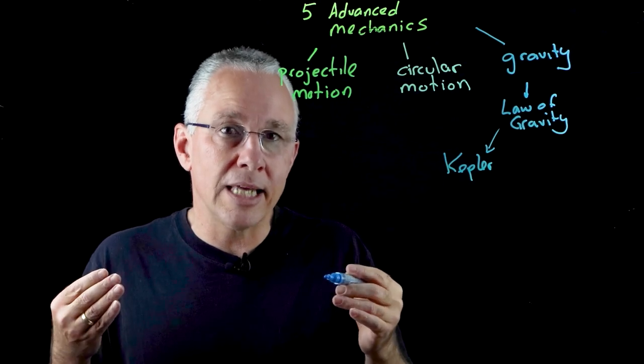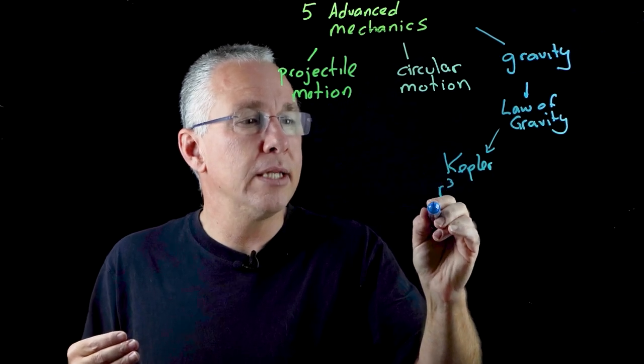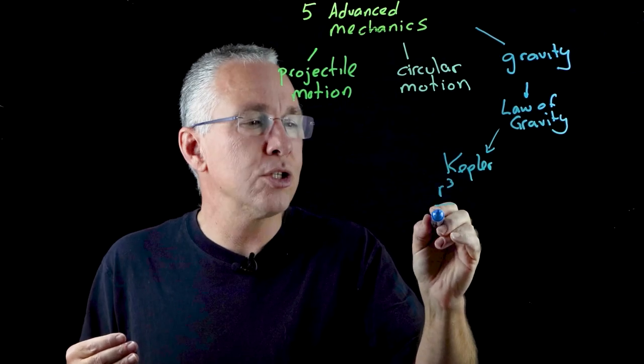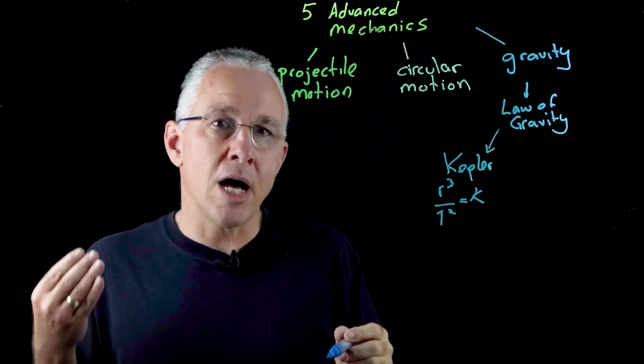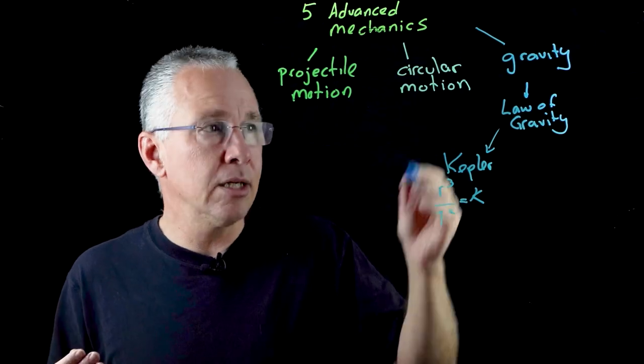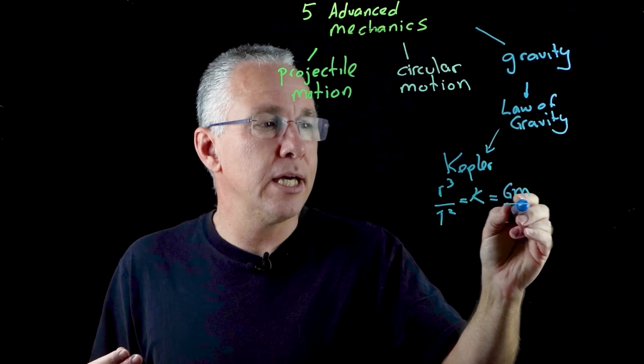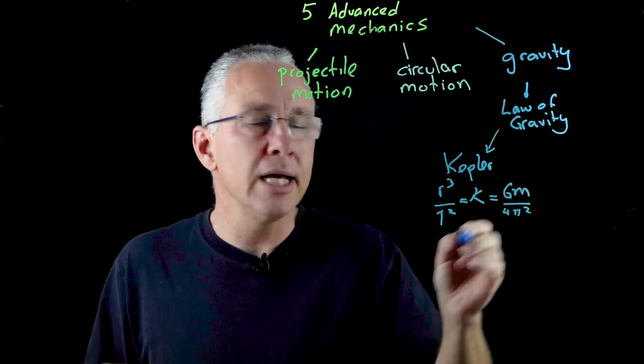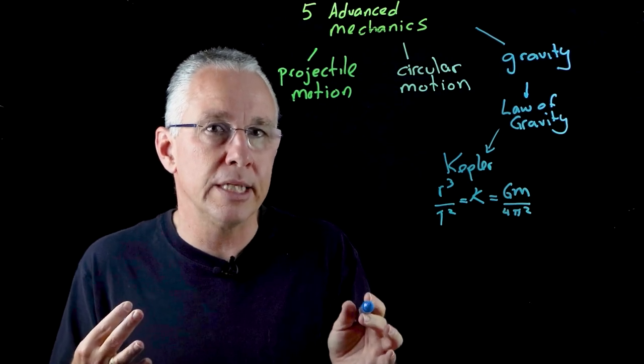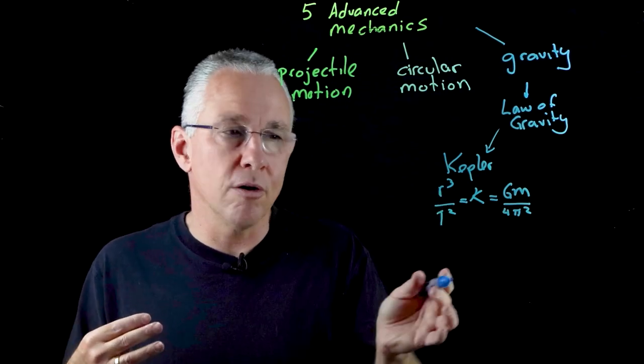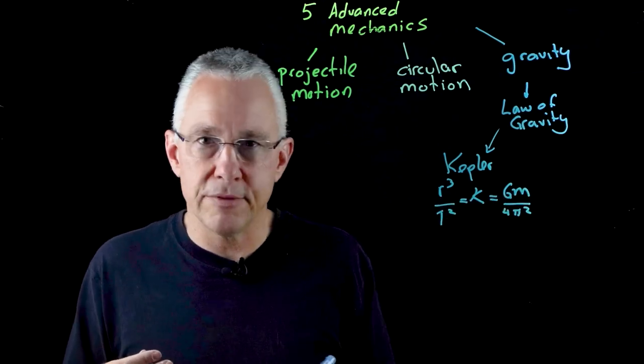And that leads us into the third Kepler law which says that the ratio between the radius cubed over the period squared is a constant value and it was Isaac Newton's understanding of the law of gravity that allows us to work out that K equals gm over 4 pi squared. And so you need to know that particular mathematical formula. In fact it's provided for you in the formula sheet and allows you to solve various problems related to r, T, and the mass of the central object.